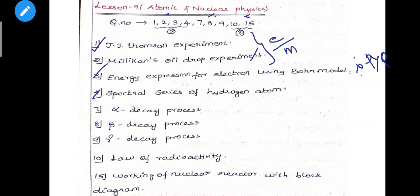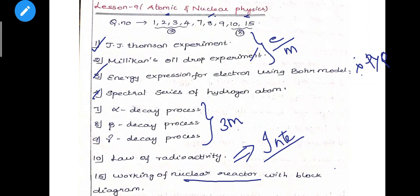Spectral series of hydrogen atom - 3 marks. Comparison - 5 marks. Alpha, beta, gamma decay. Next, Law of Radioactivity derivation, integrated form - important 5 mark. Next, 15th question - working of nuclear reactor, block diagram - compulsory question. Question numbers 1, 2, 10, 15 are compulsory questions of the chapter.